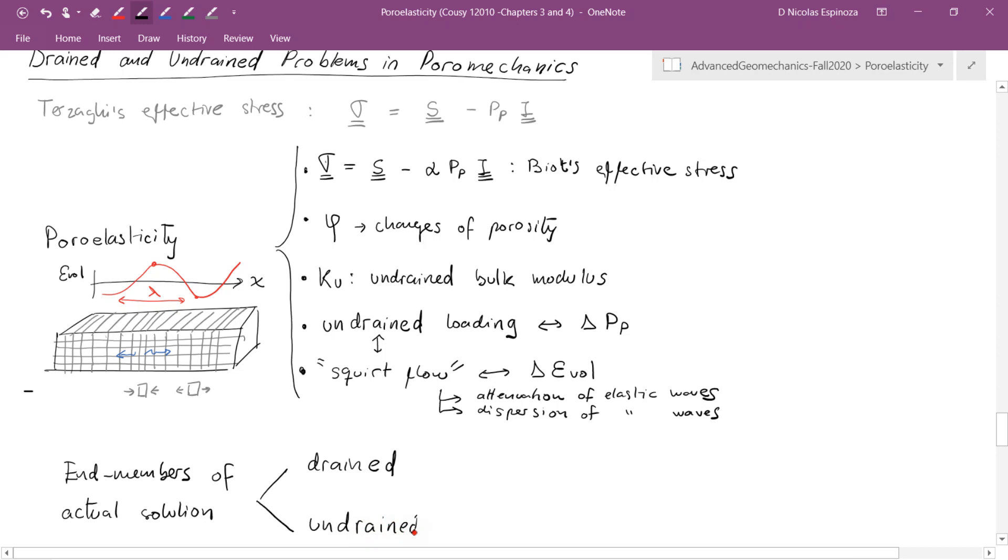The actual solution of some of these problems lies in between these two. Like for example the problem with squirt flow, it involves drained and undrained loading. And in order to solve that, what we're going to develop later on is what is called the diffusivity equation for poroelasticity. And this one allows us to solve pore pressure as a function of time and space considering mechanics and considering fluid flow.